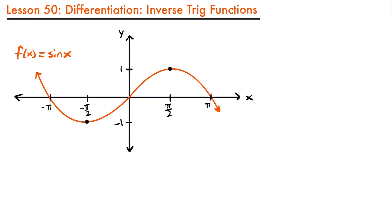In order to have an inverse function for sine and the other trig functions, we have to restrict their domain. The restriction is different for each trig function. For the sine function, we restrict its domain to be from x equals negative pi over 2 to positive pi over 2. For the sine function between those two points, each value of x corresponds to one value of y. The moment we pass either endpoint, we would have points sharing y values with points on the other side, so restricting the domain is necessary for all trig functions to have inverses.